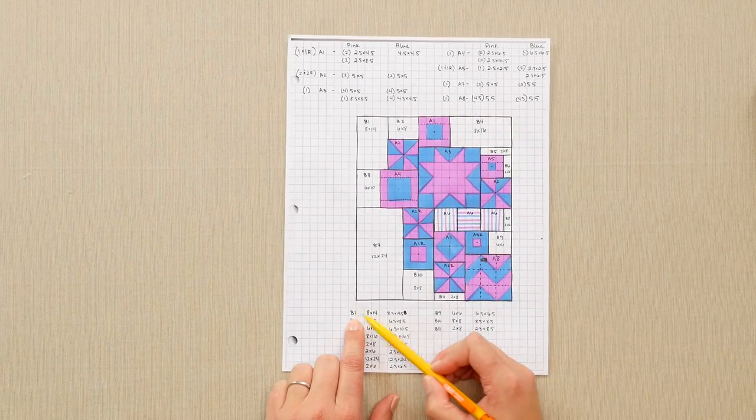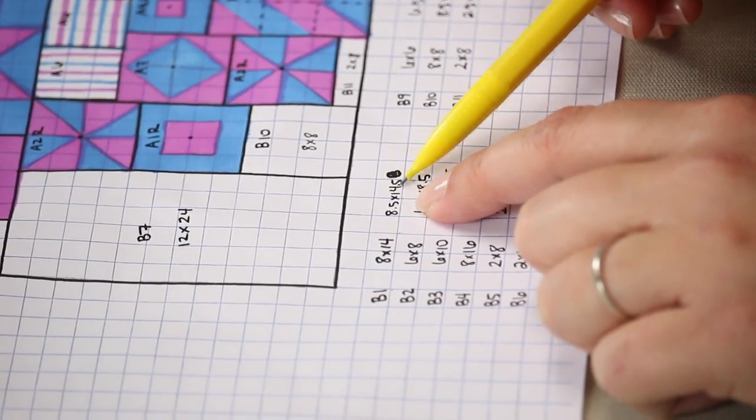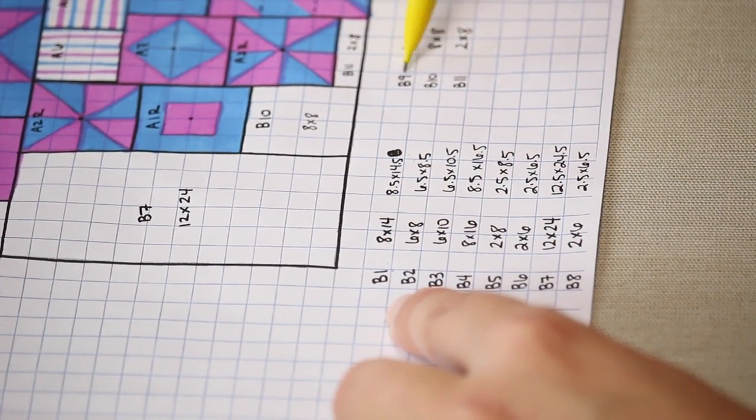My background one block is a finished eight by fourteen. So I've put this down at the bottom. My background one is eight by fourteen. Which means that my cut size is eight and a half by fourteen and a half. I've done this for every single one of my background blocks.